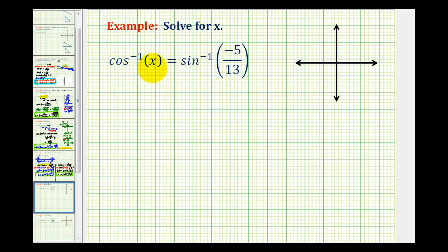We want to solve the equation cos⁻¹(x) = sin⁻¹(-5/13). To solve for x, we first want to isolate x. To undo inverse cosine, we can take the cosine of both sides of the equation.